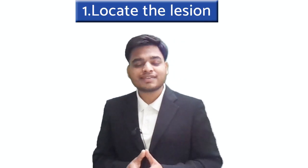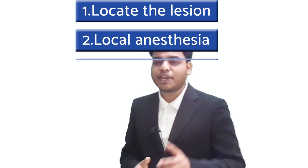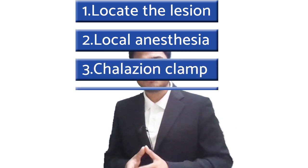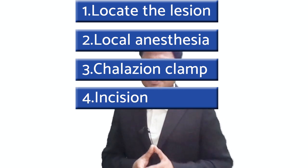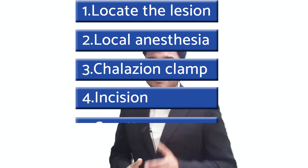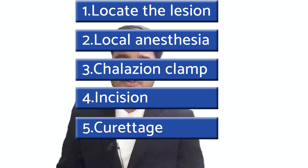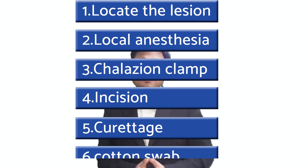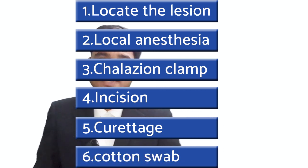Now let's wrap up with a quick summary. Step one: mark the lesion with a marking pen. Step two: apply local anesthesia. Step three: apply the chalazion clamp. Step four: make the incision with a Bard-Parker size 15 surgical blade. Step five: curettage using the chalazion scoop. Step six: apply a cotton swab and achieve hemostasis.